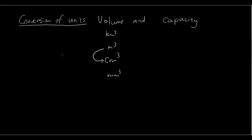Putting that into our conversion ladder: to go from meters cubed to centimeters cubed, multiply by a million. For kilometers to meters cubed, originally we had times a thousand for length, but tripling the zeros makes it 9 zeros.